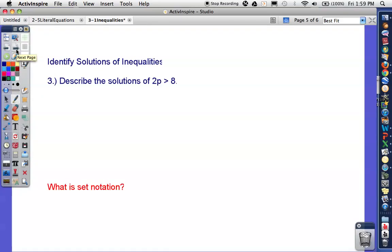The last example, if you're going to describe the solutions of this inequality, you need to first solve it. It's just like an equation, so I want to isolate the variable. To isolate my p, I need to divide both sides by 2. So I say p is greater than 4. Your solution then is p is any number greater than 4. Tomorrow in class, at the beginning, we will talk about set notation and interval notation and determine the two.